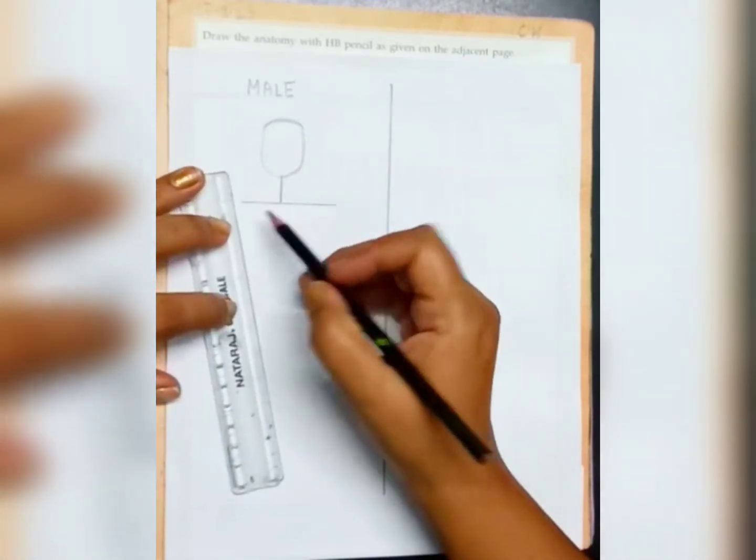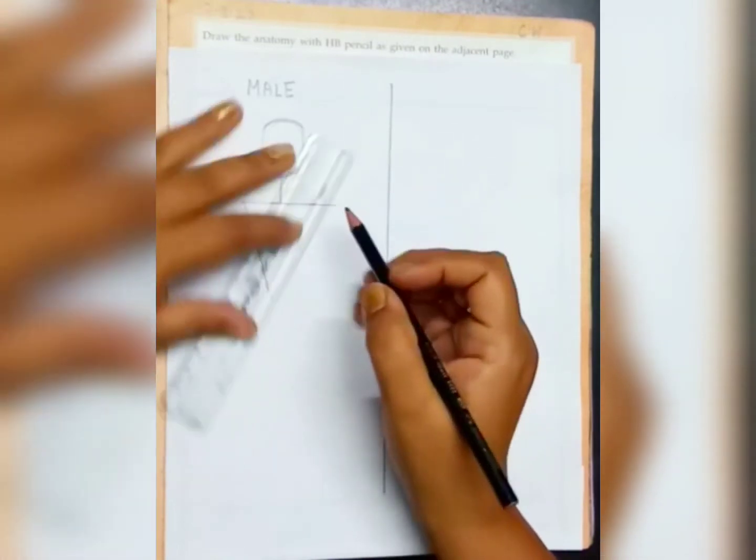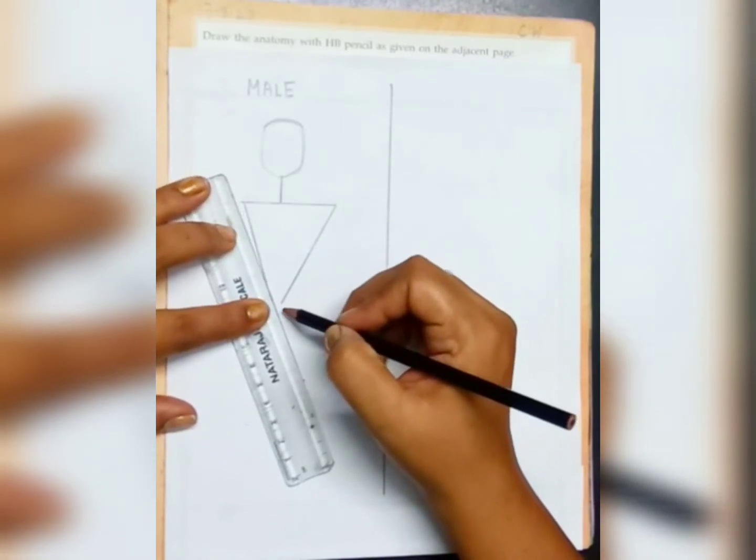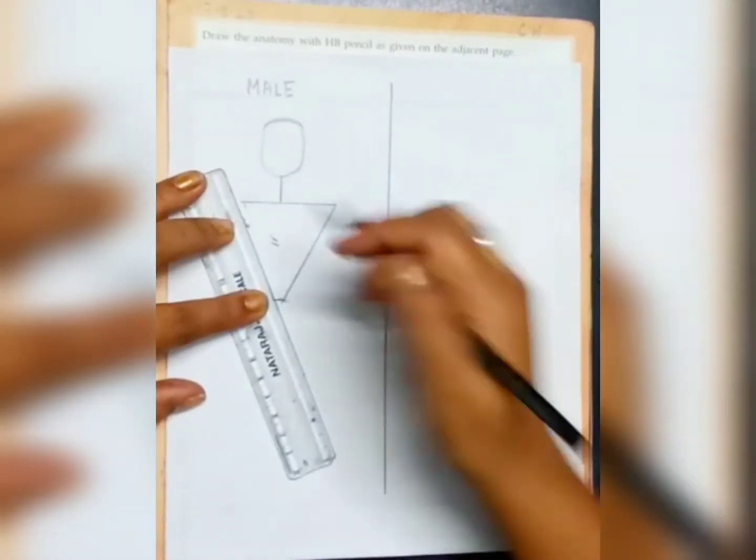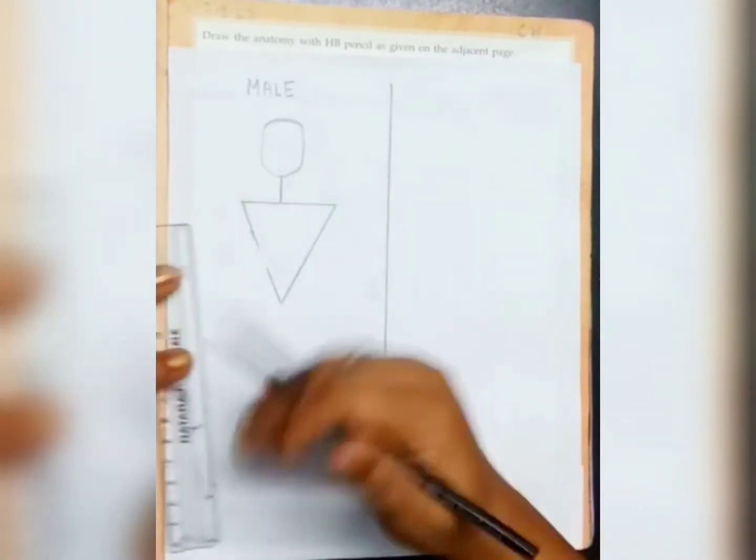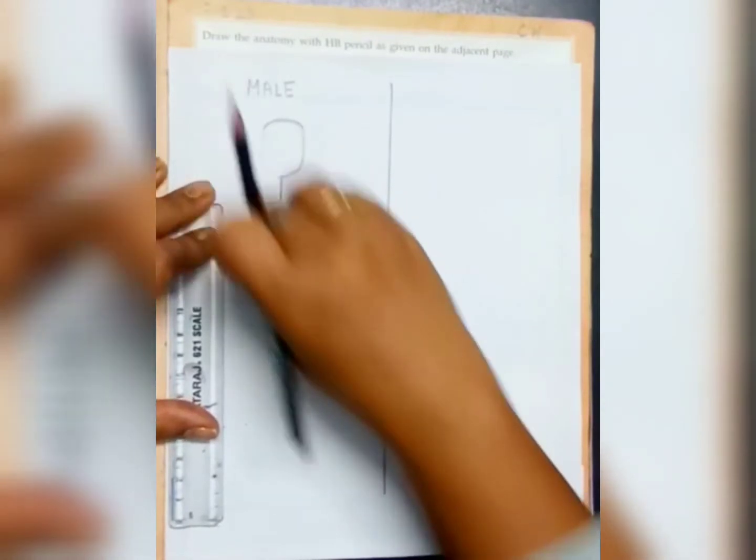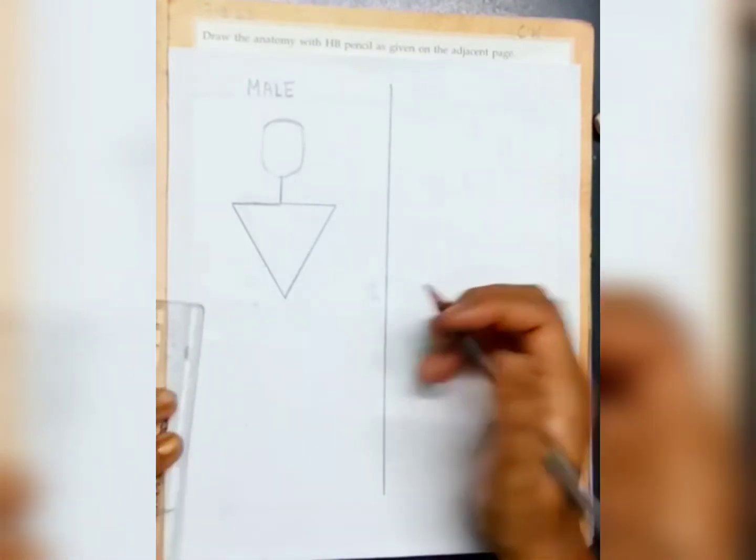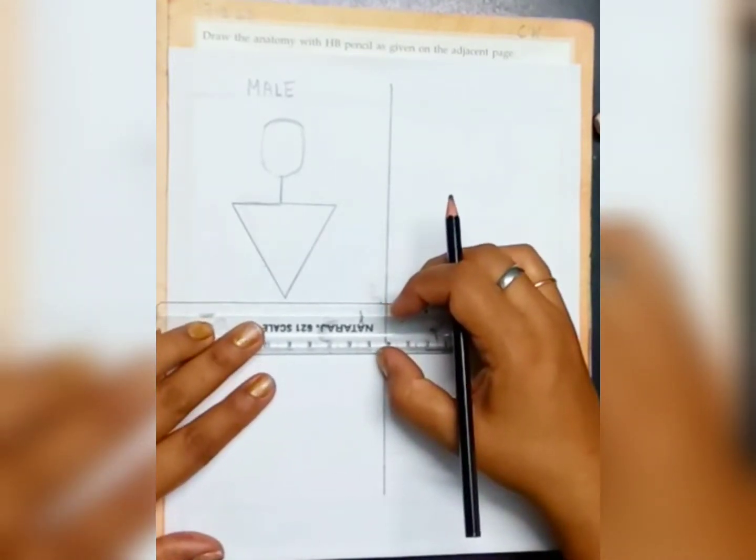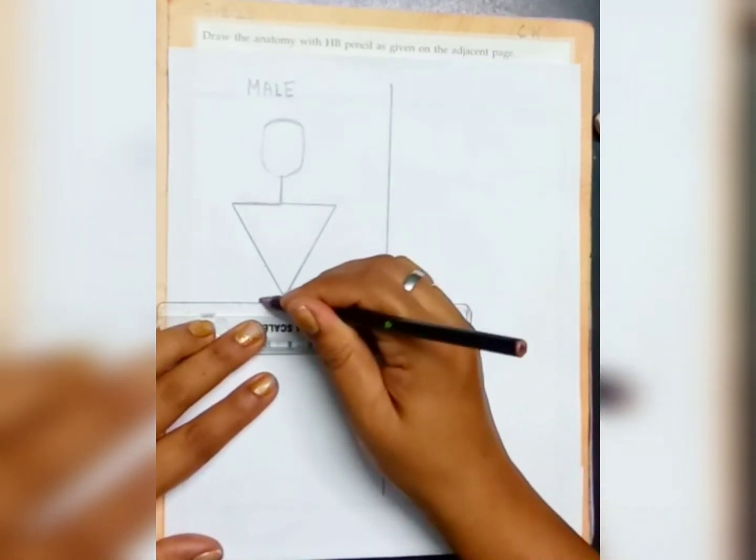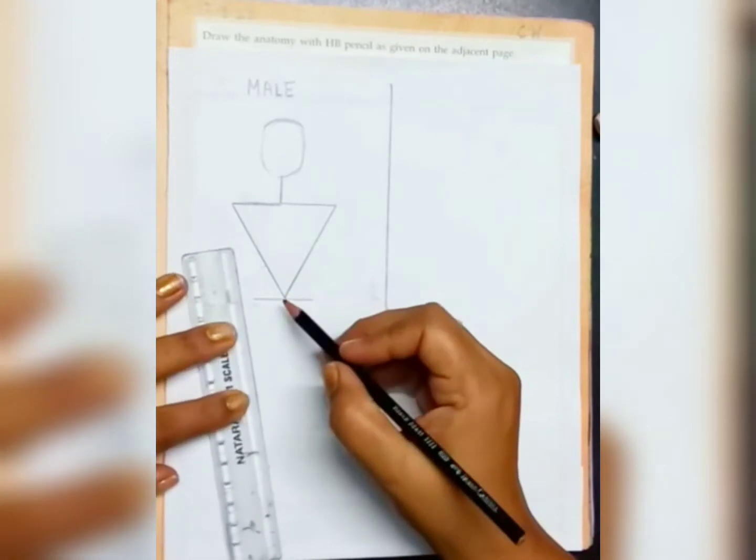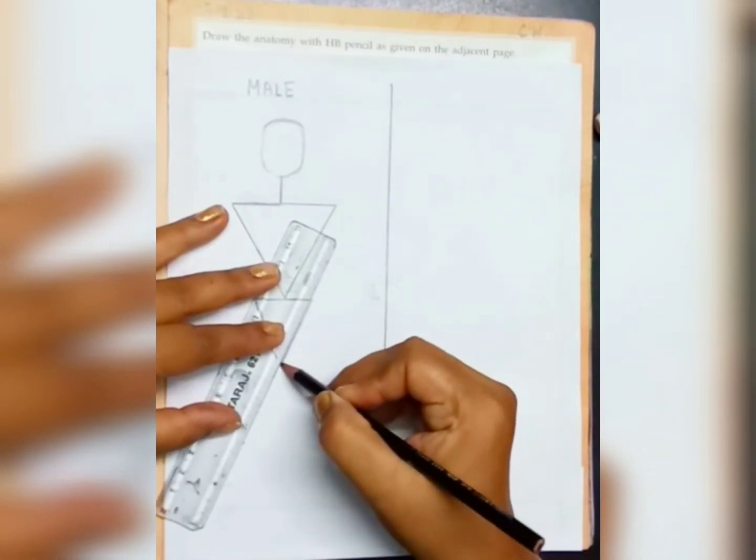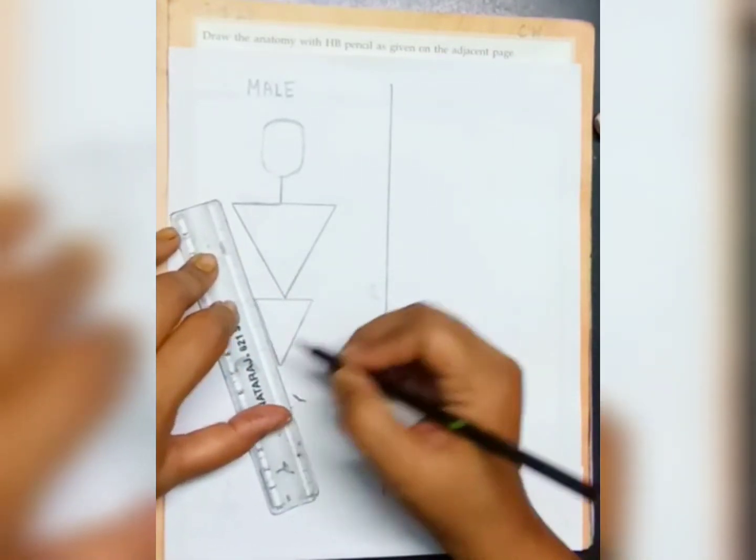Then, a triangle showing the upper body. Then, the lower triangle. It should come in equal.